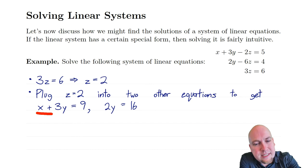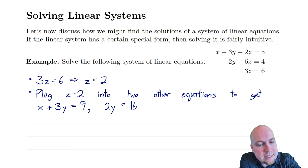This is my new linear system after making the substitution z equals 2. This system only has two variables, x and y, and again it has that triangular form. One of the equations only has one variable in it, so I can solve it easily: 2y equals 16, just divide both sides by 2, and I get y equals 8.